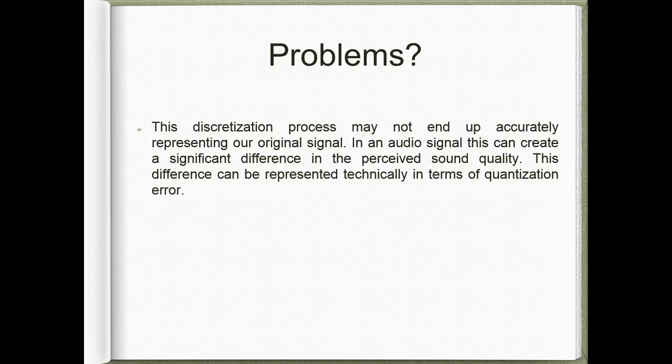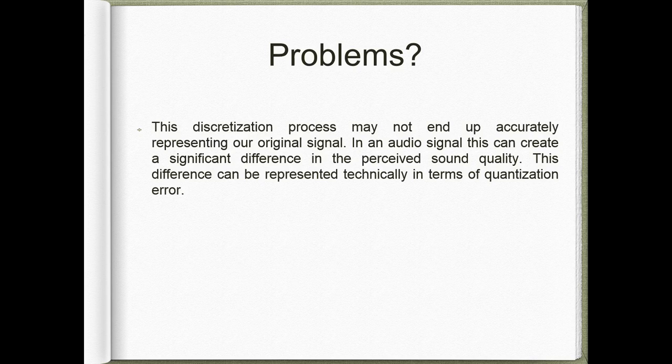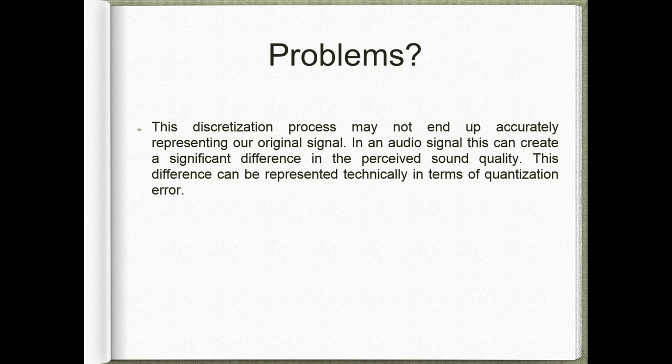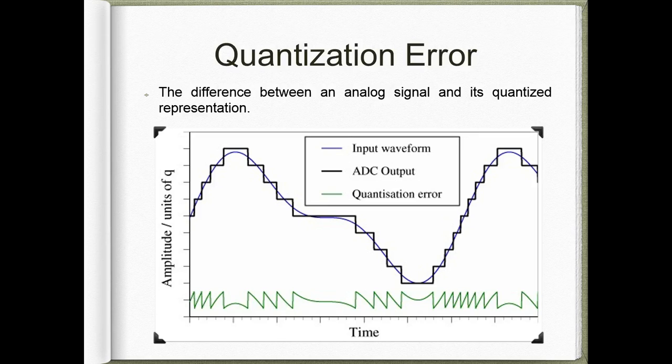Now, a problem with this compact representation is that it may not accurately represent our original signal. In an audio signal, this can create a significant difference in the perceived sound quality. This difference can be represented technically in terms of quantization error. Quantization error is simply the difference between an analog signal and its quantized representation. We'll see further why quantization error forms an integral part of the concept of dithering.